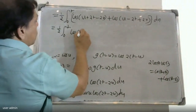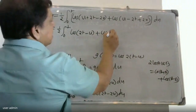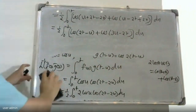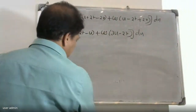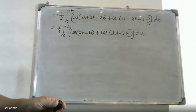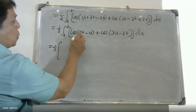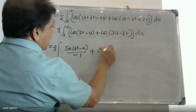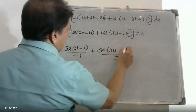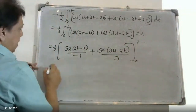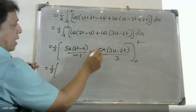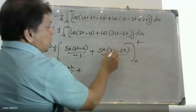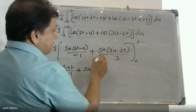Integrating, we get one half times [sin(2t minus u) divided by minus 1 plus sin(3u minus 2t) divided by 3], evaluated from 0 to t. Substituting the limits: one half into [sin(t) divided by minus 1 plus sin(t) divided by 3].